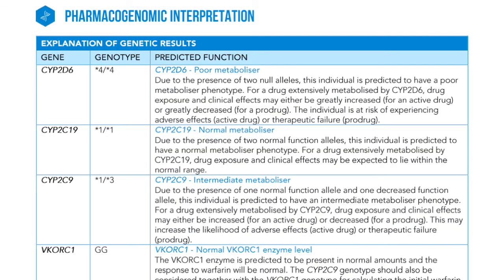At the end of the report there is a pharmacogenomic interpretation chart which provides a detailed explanation of each of your genetic results. Thank you for watching this short video overview of what to expect from your myDNA personalised medication report. We hope it will help you to get the most out of your pharmacogenomic consultation.